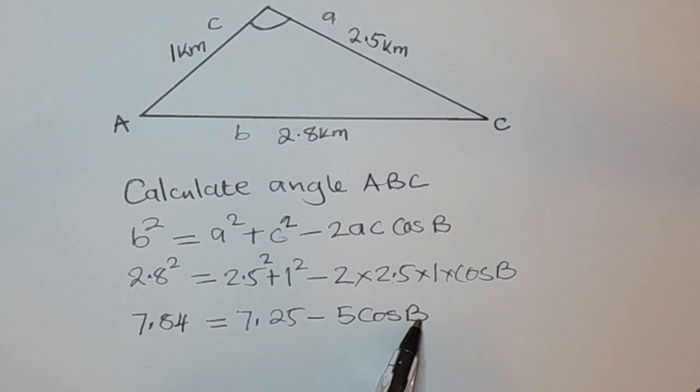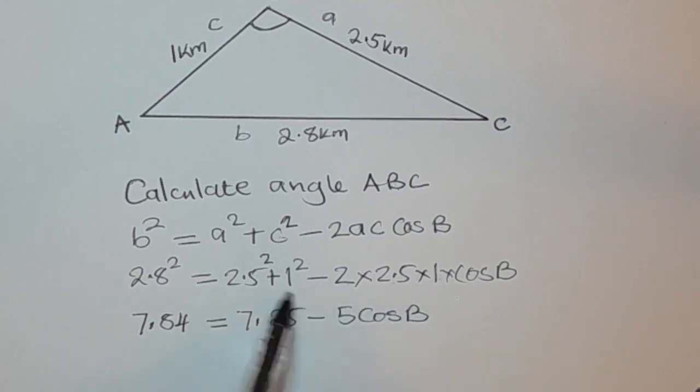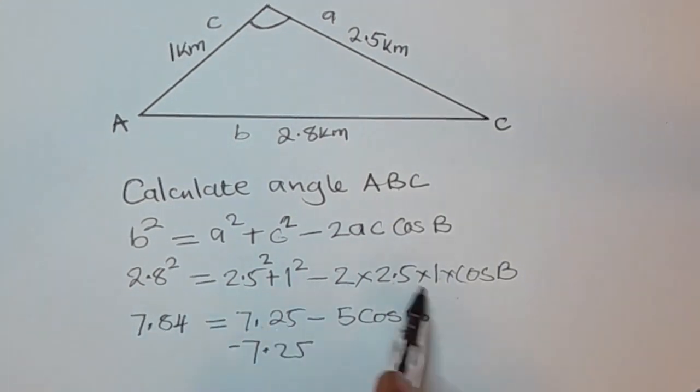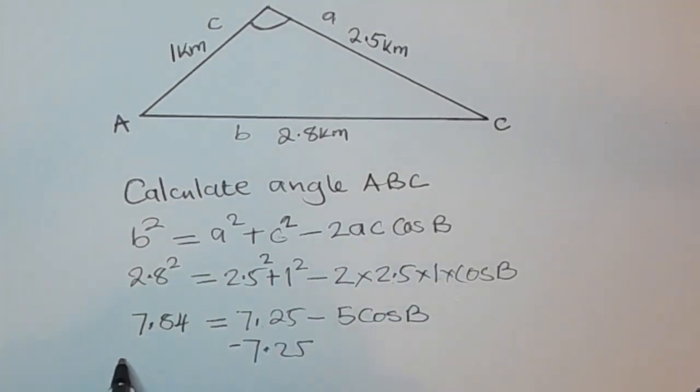Okay, so our aim is to find what B is, the angle, meaning on the right we want to remain with this term that has the variable or the angle that you are looking for. This term has to be removed from the right hand side and be taken to the left. In other words we are just collecting like terms together. This is 7.25 positive, so for us to remove this we are going to subtract 7.25. So what you've done here you also do the same on the left.